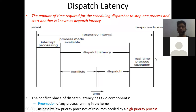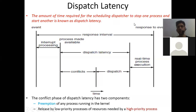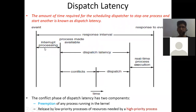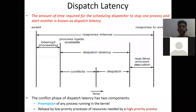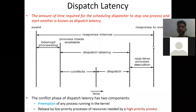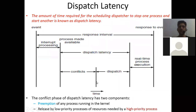Diagrams are important — you must draw them in the examination. To recap dispatch latency: the amount of time required for the scheduling dispatcher to stop one process and start another. An event occurs, the arriving process is interrupted, it is made available, conflicts are resolved — preempting the running process and releasing low-priority resources for the high-priority process — then dispatching occurs, and real-time process execution starts. The total time is the response interval, also called dispatch latency.